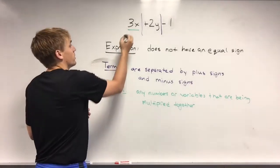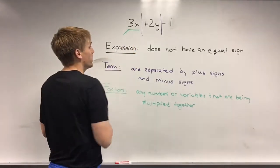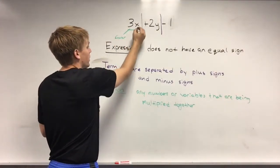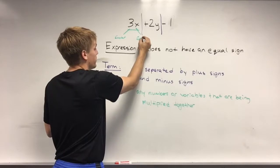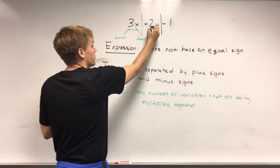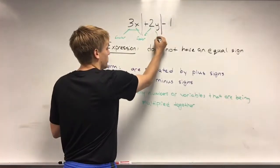So if we look here, since they're being multiplied together, 3 is a factor, and x is another factor. If we look at the second term, 2 is a factor, and y is also a factor.